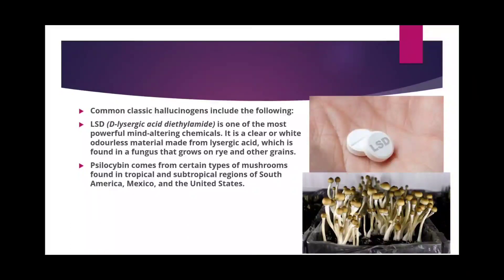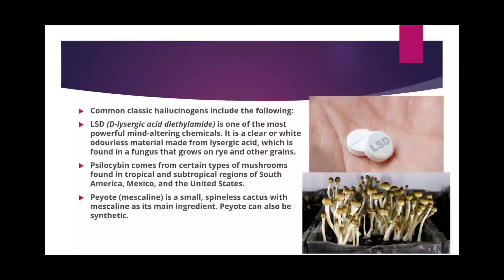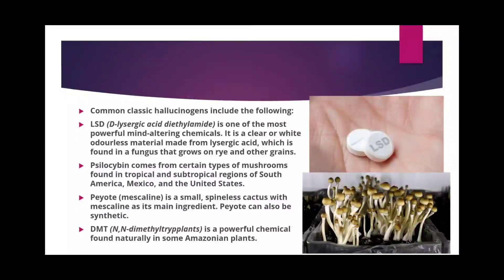Psilocybin comes from certain types of mushrooms found in tropical and subtropical regions of South America, Mexico, and the United States. Peyote, or mescaline, is a small spineless cactus with mescaline as its main ingredient — peyote can also be synthetic. Another classic hallucinogen is dimethyltryptamine (DMT), a powerful chemical found naturally in some Amazon plants.